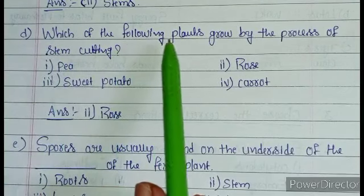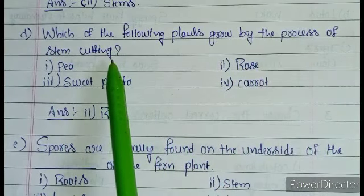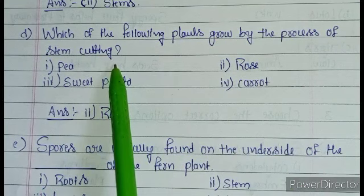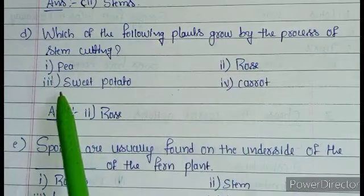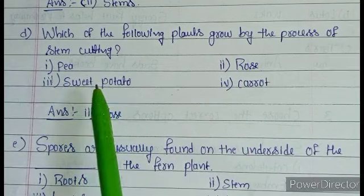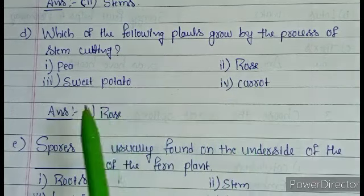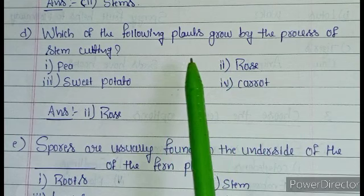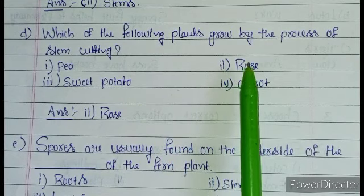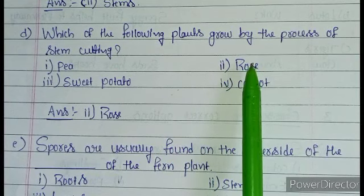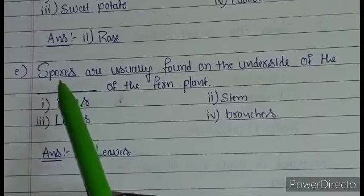Question D: which of the following plants grow by the process of stem cutting? First option pea, second option rose, third option sweet potato, fourth option carrot. The correct answer is rose. Rose plants grow by the process of stem cutting.